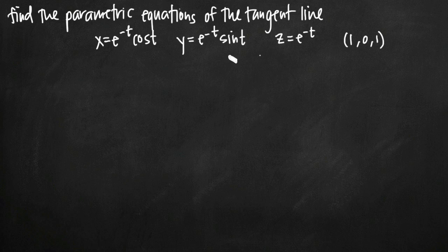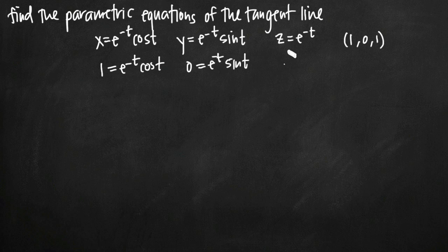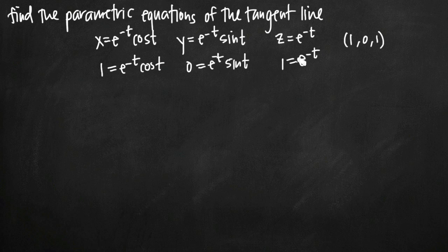We replace x with 1 and say 1 equals e to the negative t cosine of t. We replace y with 0 and say 0 equals e to the negative t times sine of t. And we replace z with 1 and get 1 equals e to the negative t. We need to find a parameter value for t satisfying all three equations. Looking at the simplest third equation, if e to the negative t equals 1, then t equals 0, since e to the 0 equals 1.